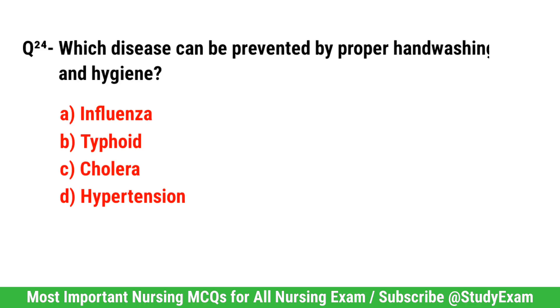Gallbladder. Question number 24. Which disease can be prevented by proper handwashing and hygiene? Right option is C. Cholera.